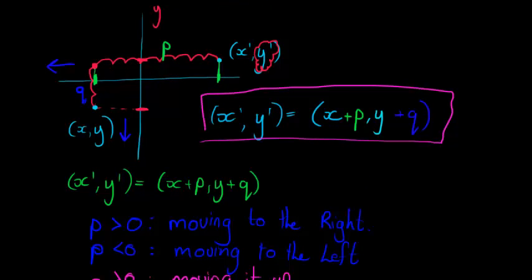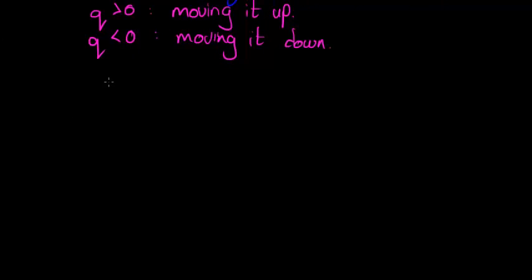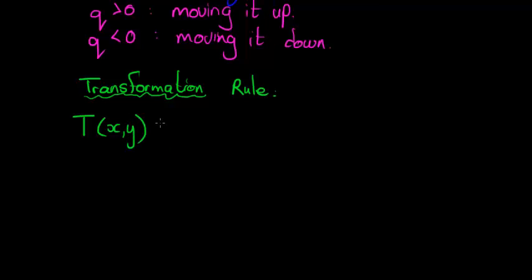This is called the transformation rule. The transformation rule for a translation looks as follows: T represents that we are working with a transformation on (x,y), and then we have a little arrow. On that arrow we can indicate what type of transformation we are working with. In this case we are doing a translation. How do we do this translation? Well we took x+p and we took y+q.